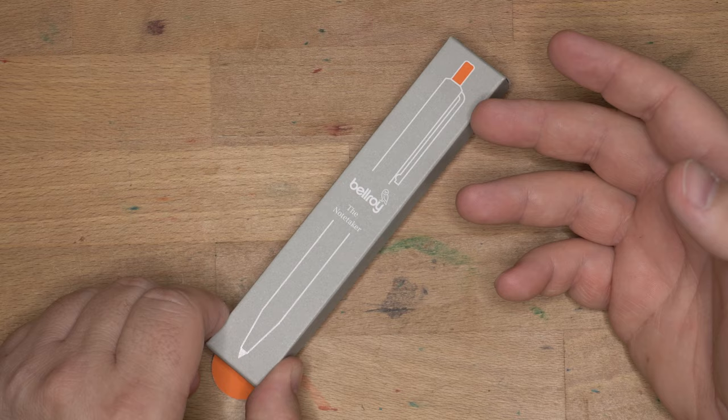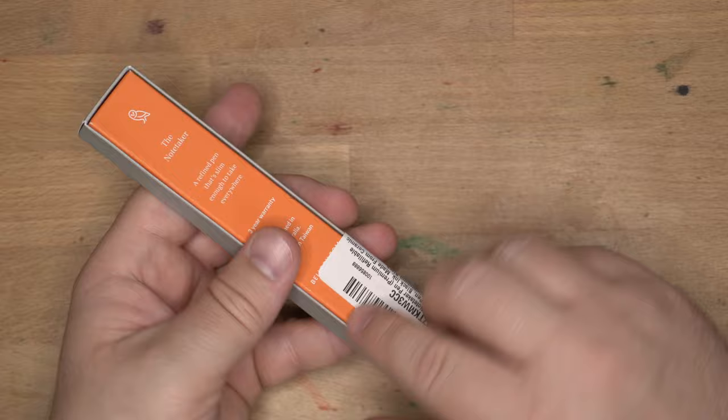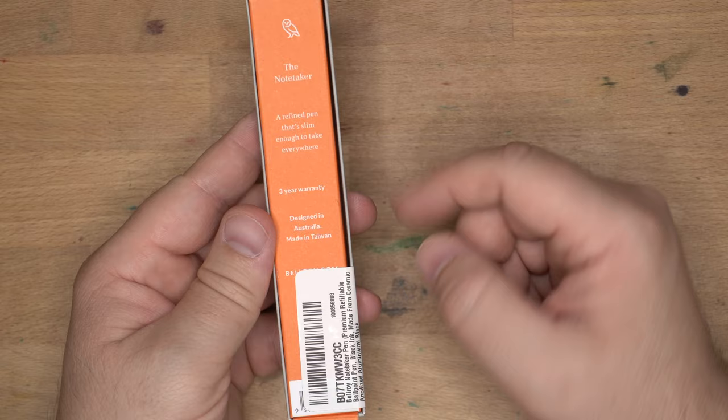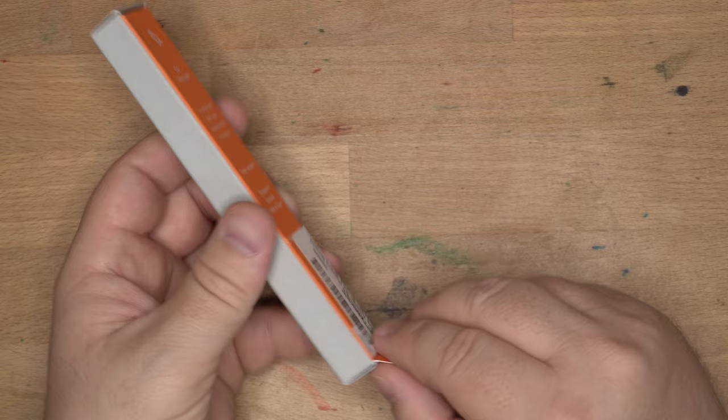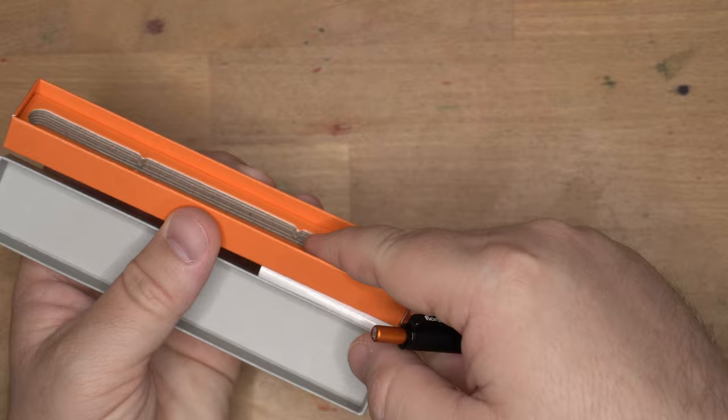So let's get inside here. You can see already this packaging is very on brand for Mike. I think also my friend Brad the pen addict would approve of this gray and orange motif. It's good stuff. On the back it says the Notetaker, a refined pen that's slim enough to take everywhere. Totally true. Has a three-year warranty, which is pretty nice. Designed in Australia, made in Taiwan. Now here inside the packaging you see they have no styrofoam or anything like that. This is shaped corrugated cardboard stuff in here.